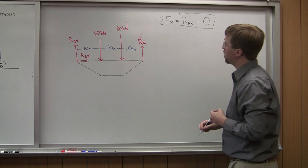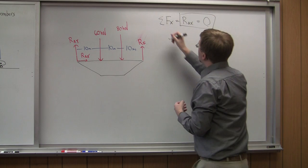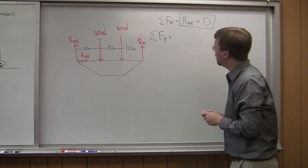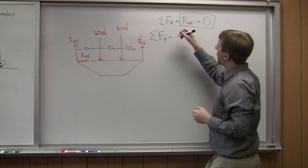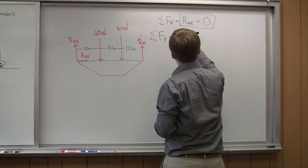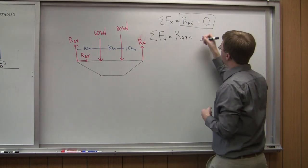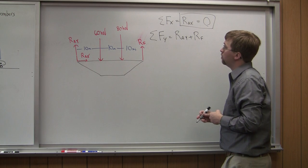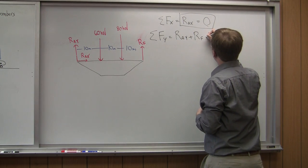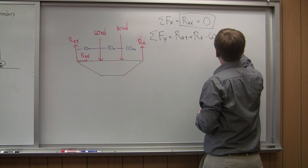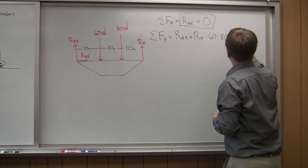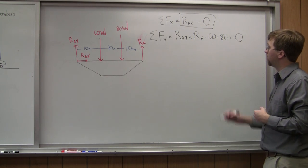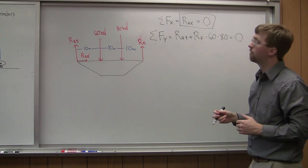For sum of forces in Y, we have RAY plus RF minus 60 minus 80 equals zero. Since we've got more than one unknown here, we'll come back to this equation after taking moments.